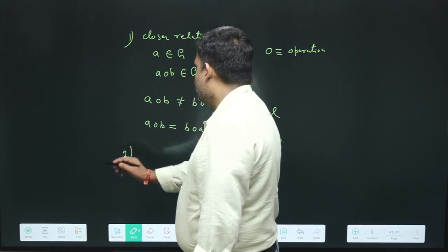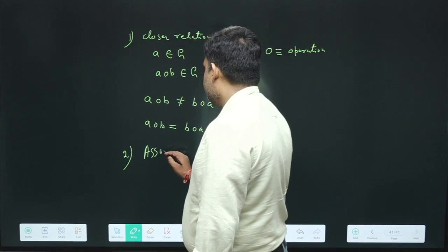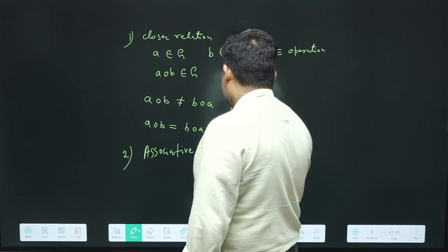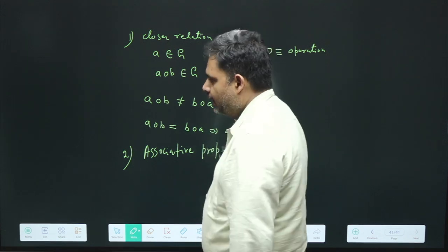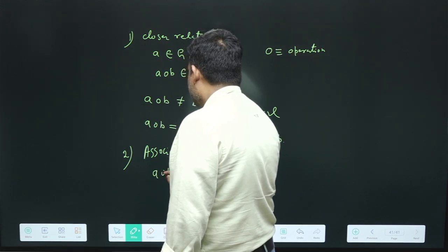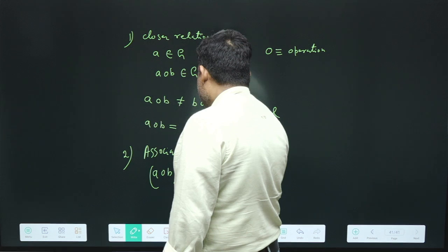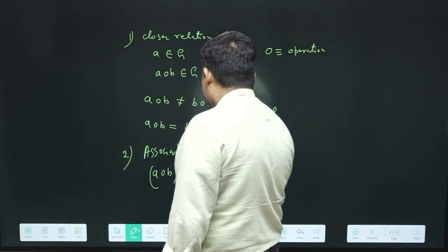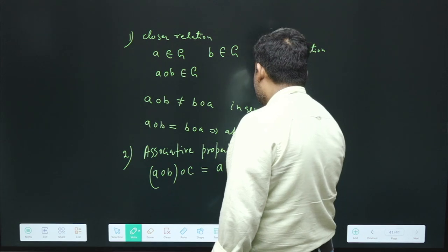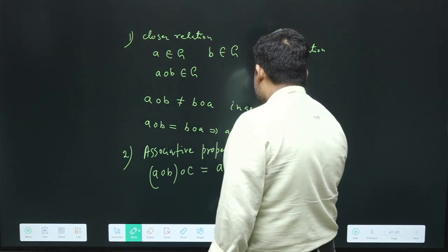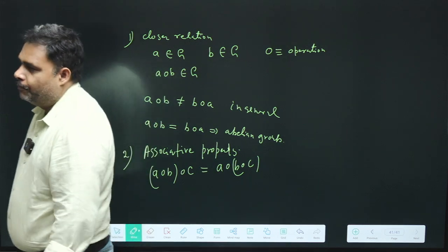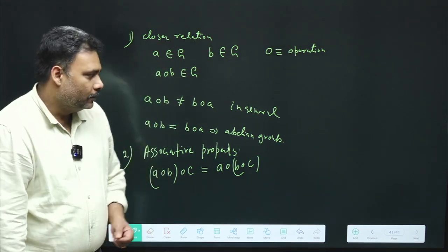The second property is the associative property. In this associative property, we have A operation B — we first perform A operation B — and then whatever result we find, we perform the operation with C. So (A operation B) operation C equals A operation (B operation C). Elements belonging to the same group follow the associative property.